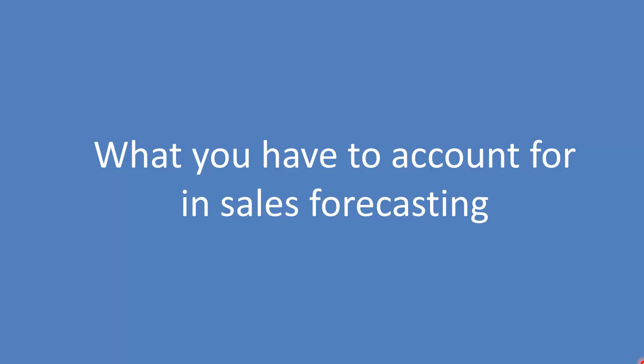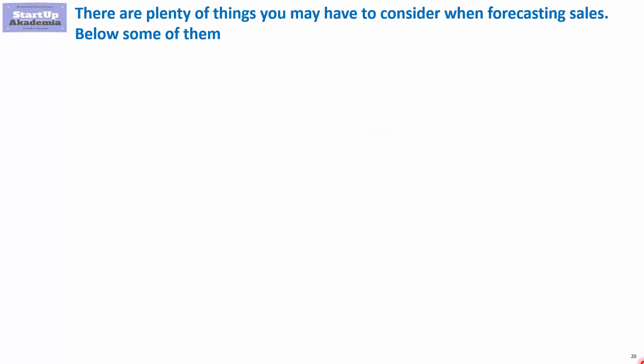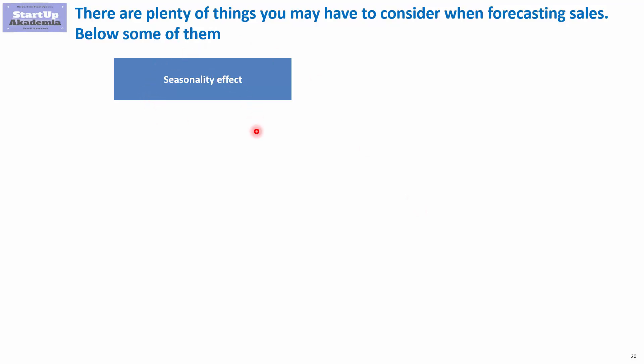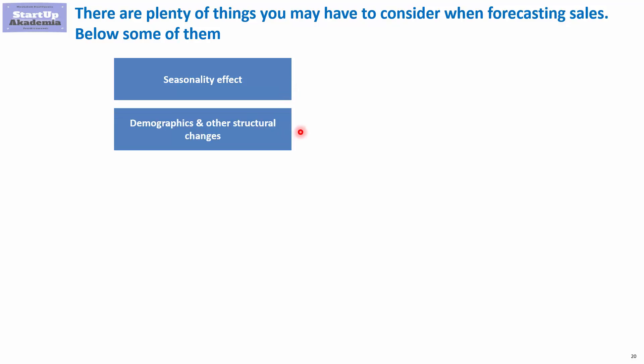Let's have a look at what kind of things you should take into account when preparing the sales forecast. First of all, most sales forecasts will be subject to some sort of seasonality effect — in other words, sales will be different in different periods of the year. It might be due to the weather or due to the product cycle. Seasonality is strongest, obviously, in consumer goods. For example, ice creams will have much higher sales in the summer than in the winter.